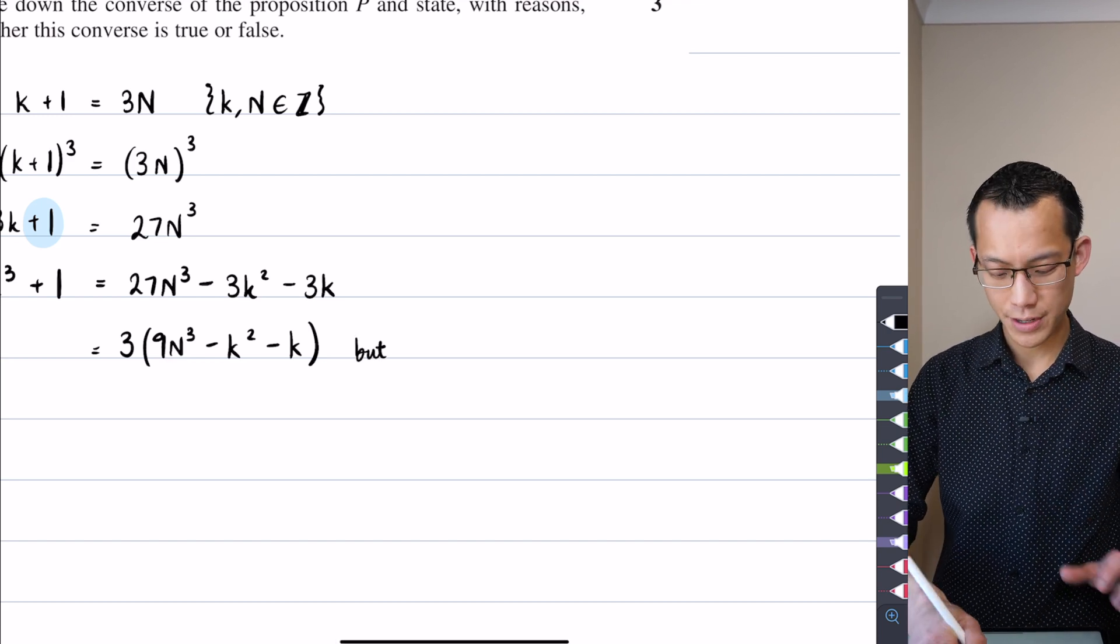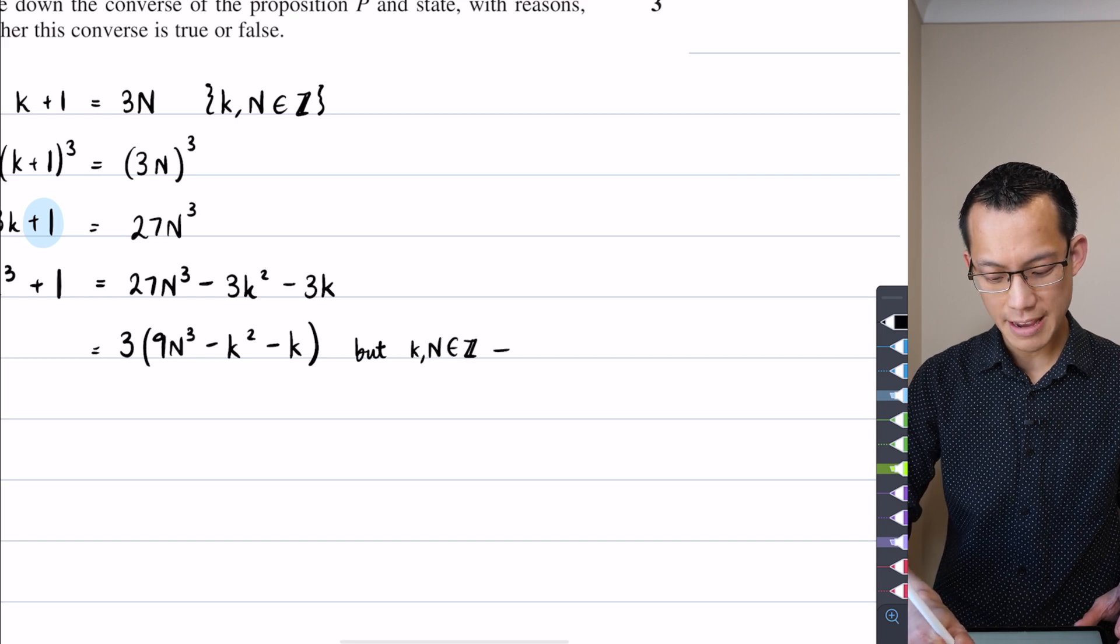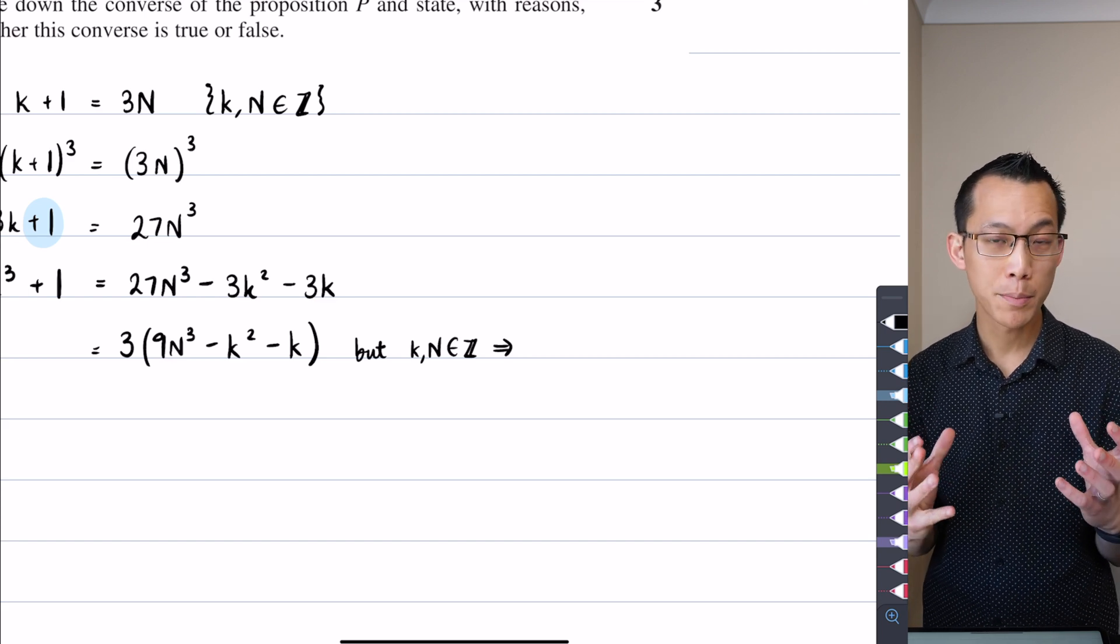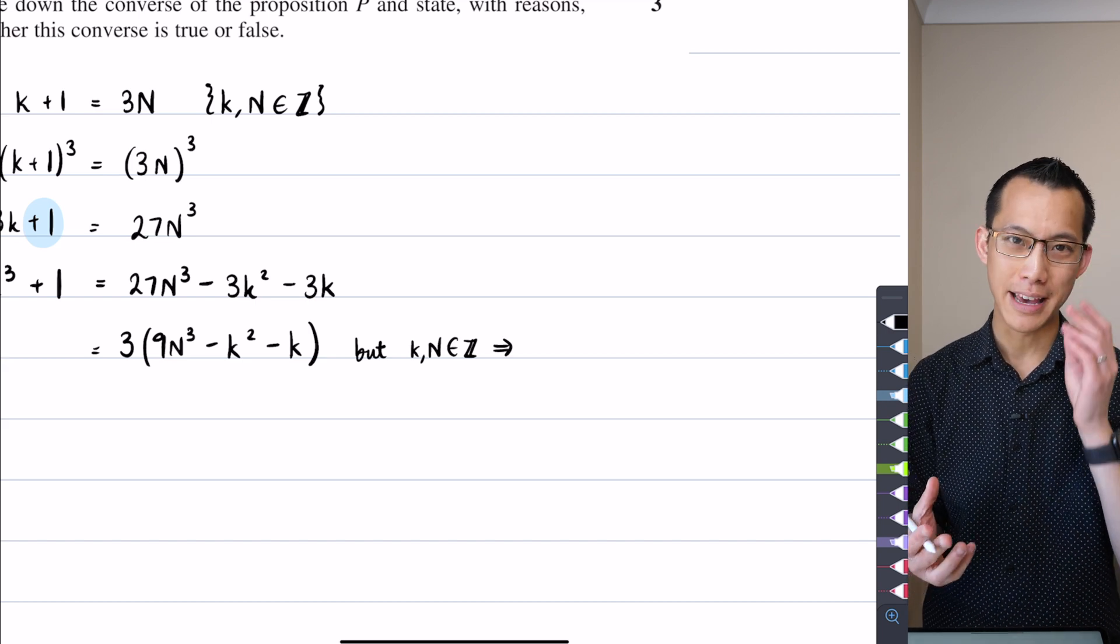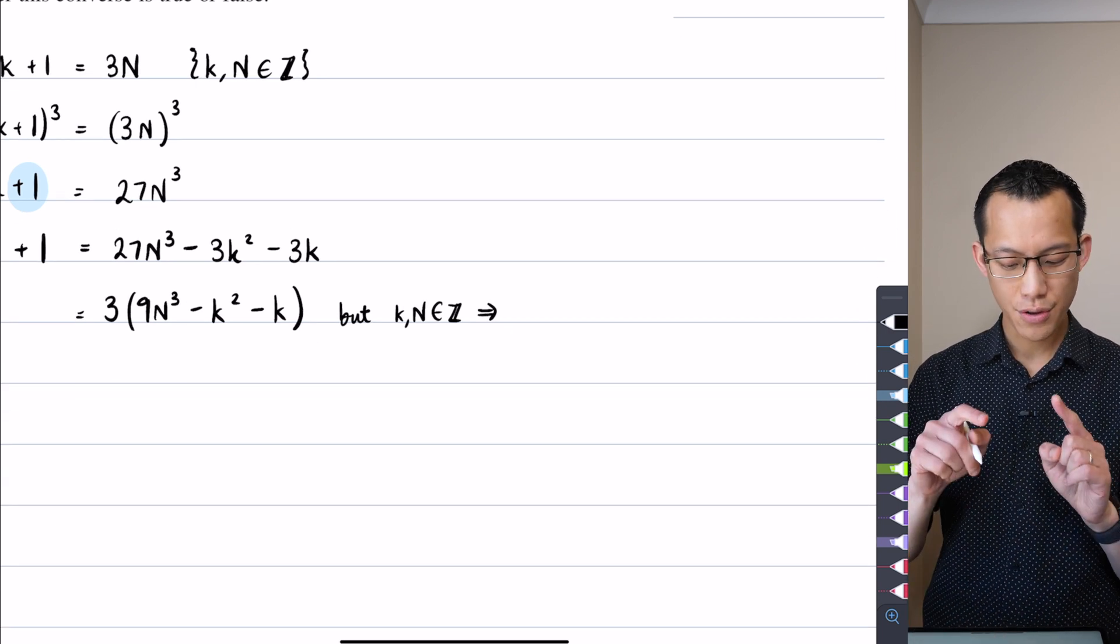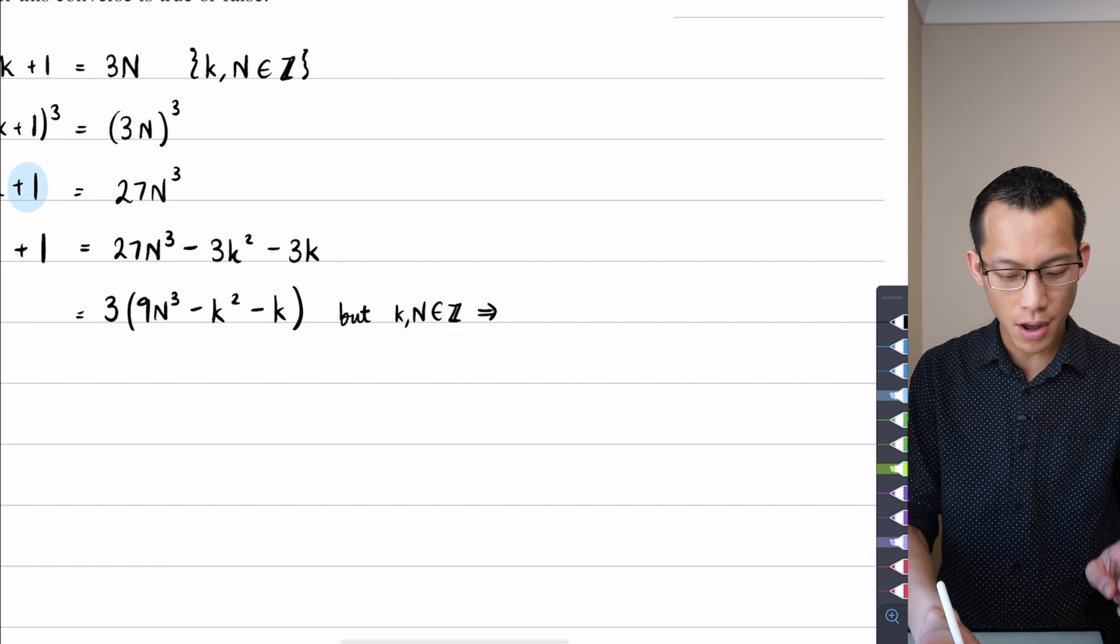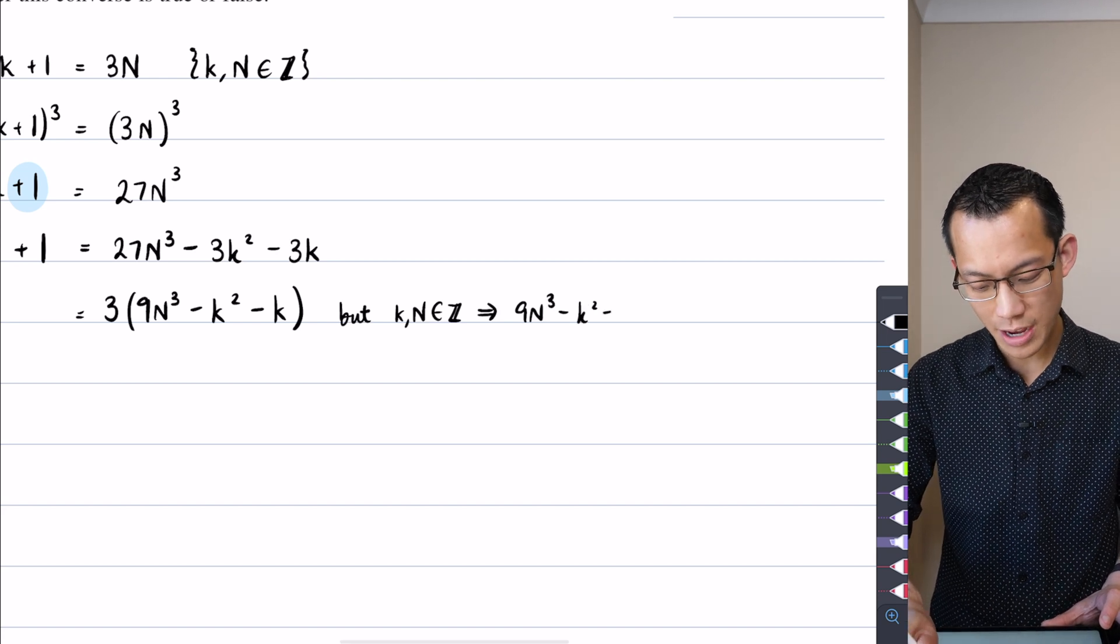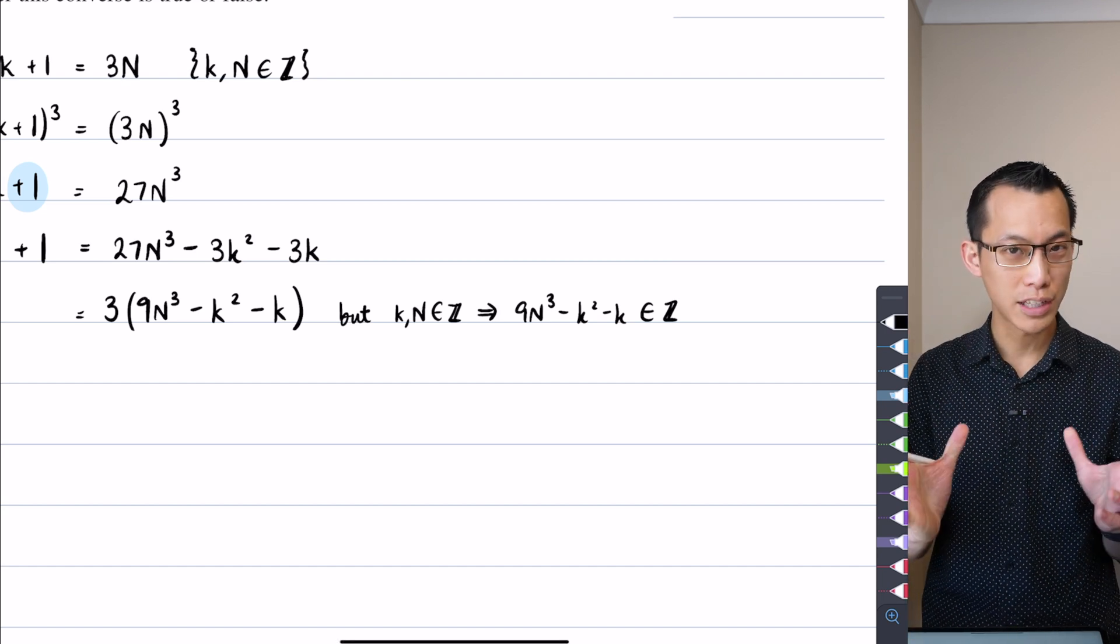K and n, if they are integers. What that implies is that no matter how many times you add or subtract or multiply these integers by whole numbers, you'll still stay in whole number land. You'll still stay in integer. So this statement here, that k and n are integers, implies that 9n cubed minus k squared minus k is also an integer. That whole expression.